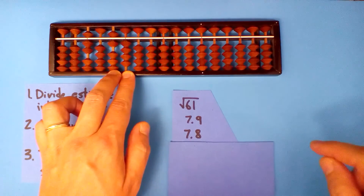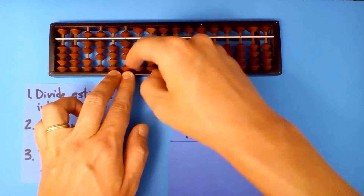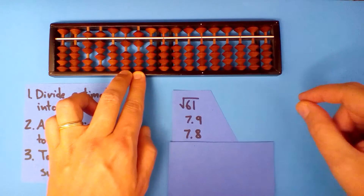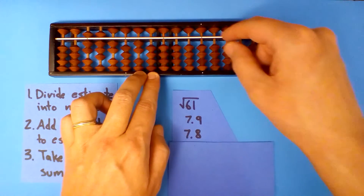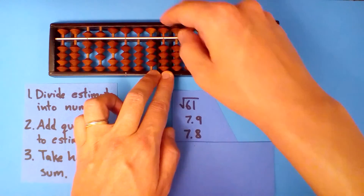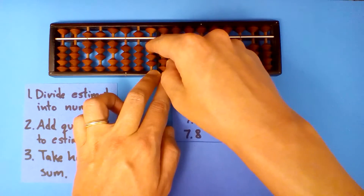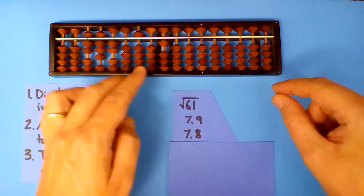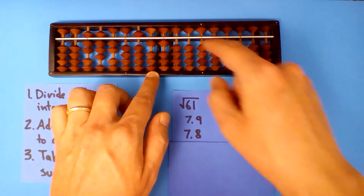7.8 into 64, 8 times. 8 times 7 is 56. 8 times 8 is 64. 7.8 into 16, twice. 2 times 7 is 14. 2 times 8 is 16. 7.8 into 14, 5 times. 5 times 8 is 40. 7.8 into 10, once. And I'll stop there — this should be enough to get our next estimate.